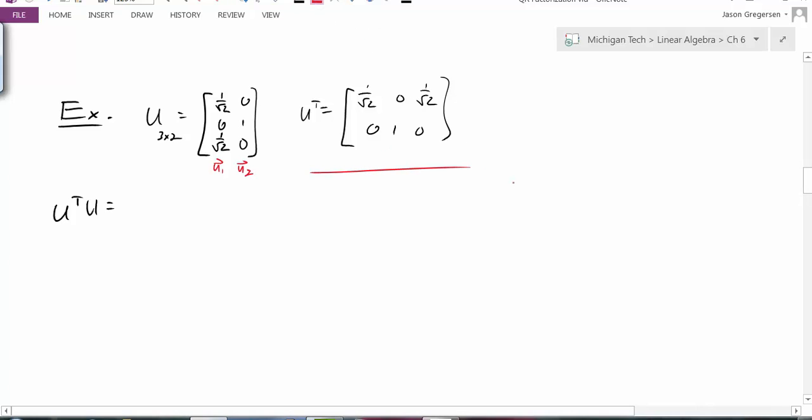So then I've written out what U transpose is, and then I look at the product. Looks like I have 1 over root 2, 0, 1 over root 2, 0, 1, 0. That's my U transpose. And I'm multiplying that by my U matrix, and the result will be, looks like I'll get 1 over root 2 times 1 over root 2, that's 1 half, plus 0, plus 1 half. And I take 1 over root 2 times 0, which is 0, plus 0, plus 0. And I go through and use my second column here, and I will get 0 in that first component and 1 in the second component.